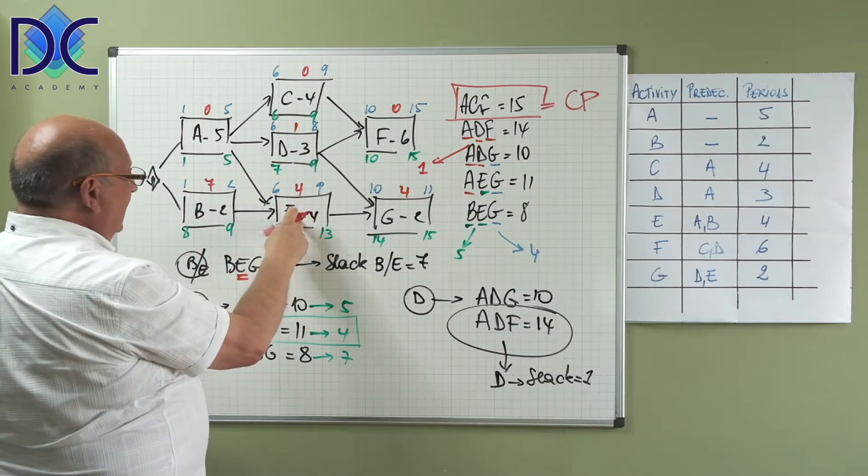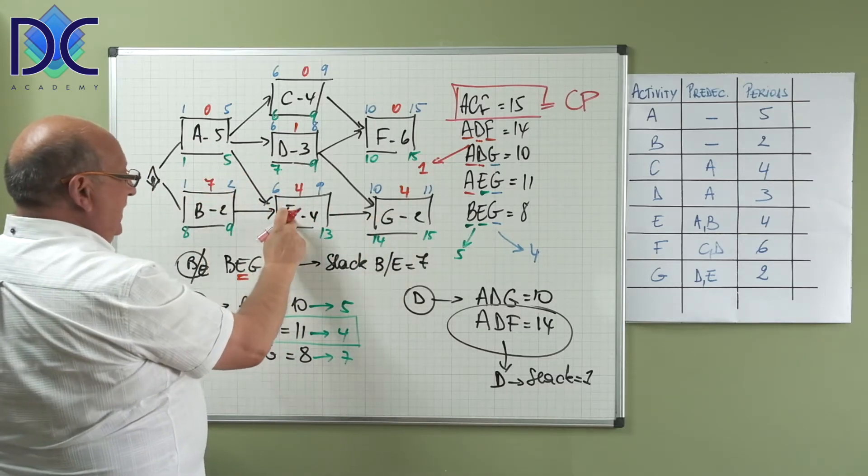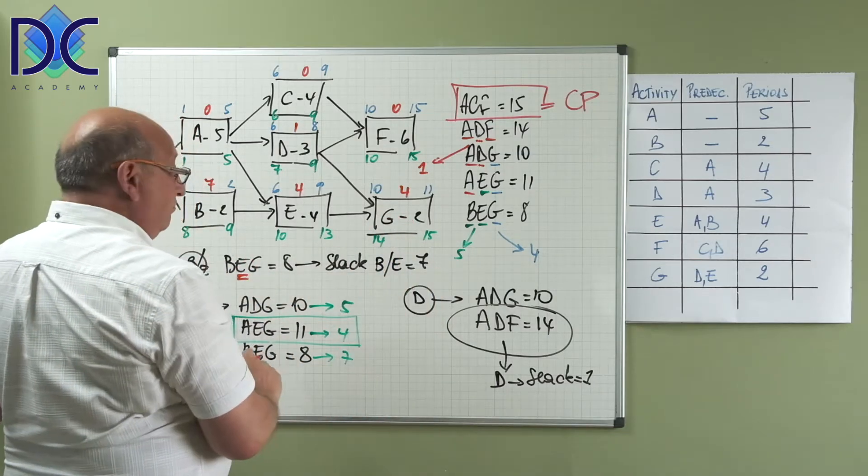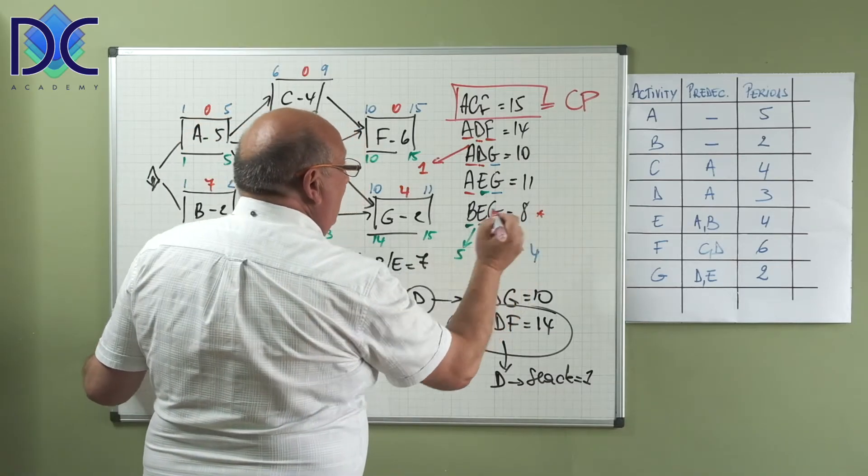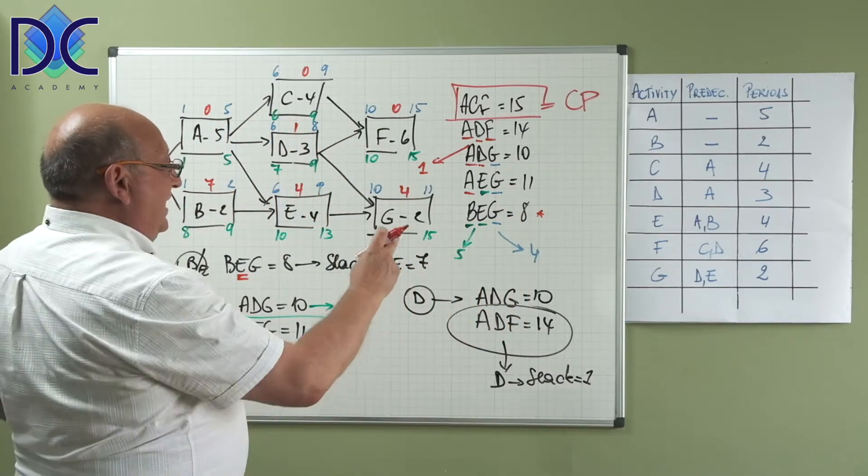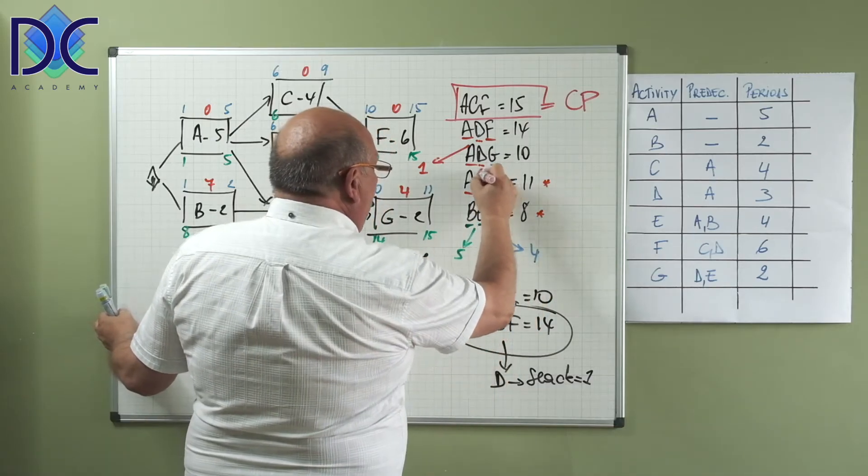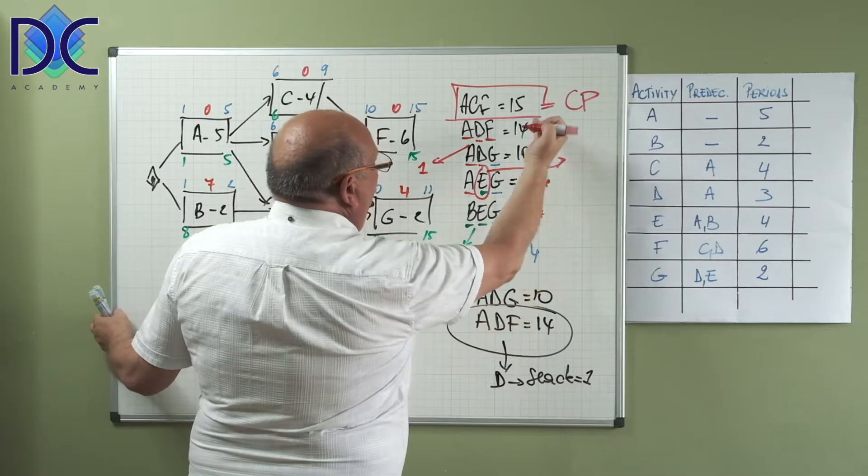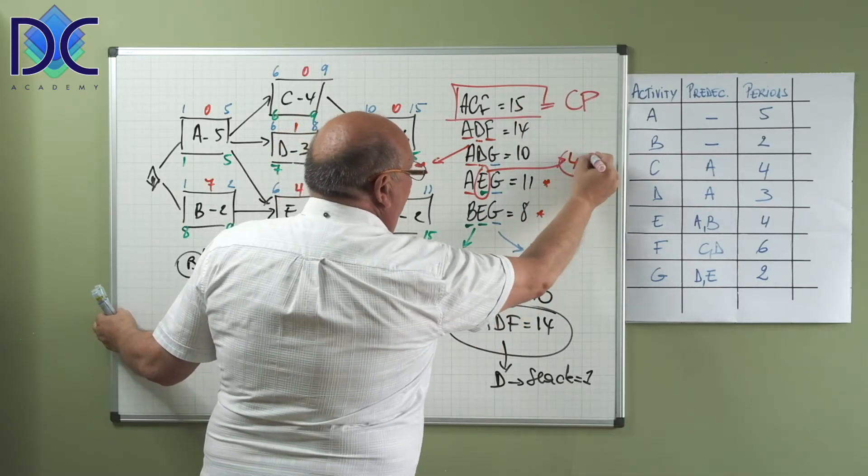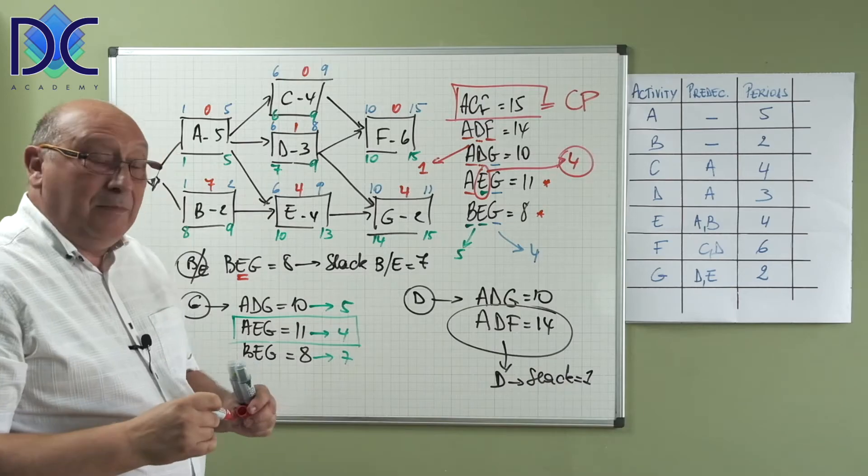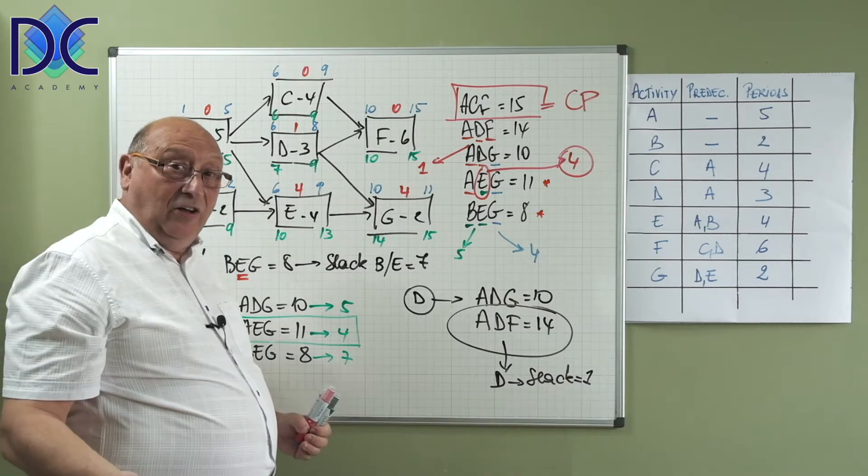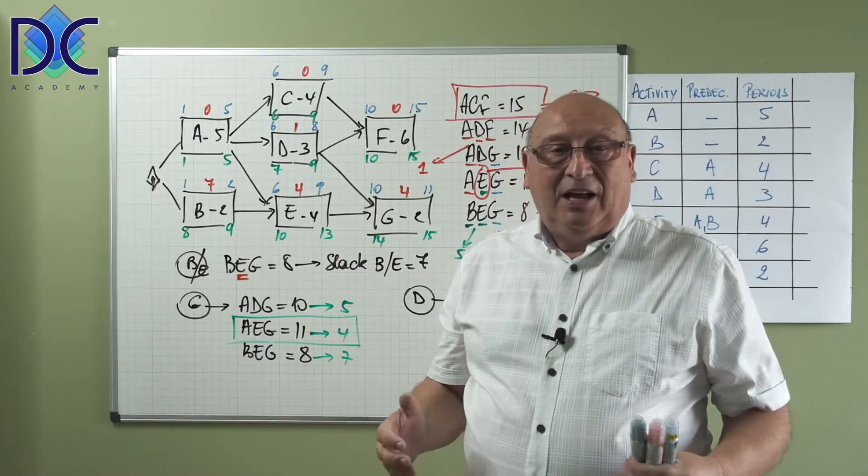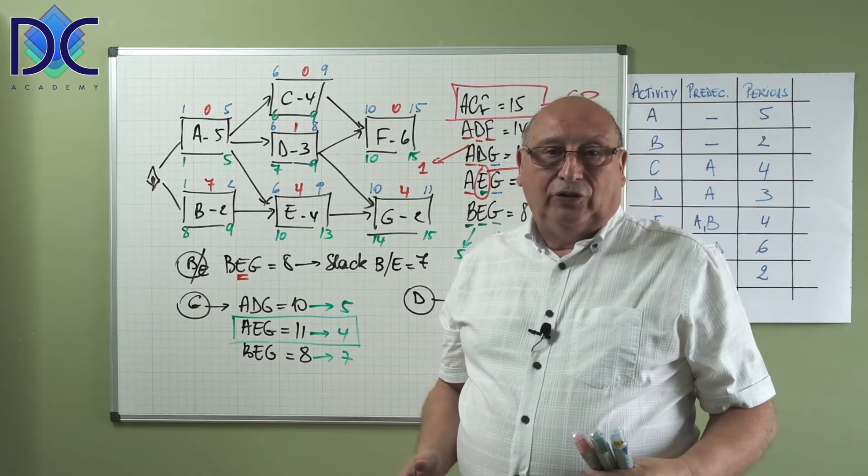I must say that I made an error here for E because E is on two paths, E is on AEG and BEG. When we take BEG we have 8, when we have AEG we have 11, so basically E has a slack of 15 minus 11 is 4. So basically I made some error there, but I found it. Working on the board, it's not always the same as working on the table.